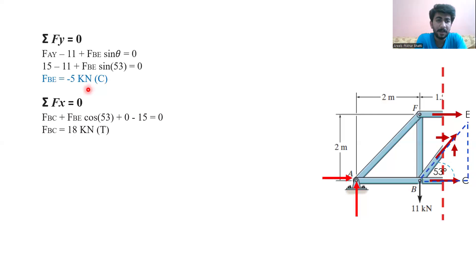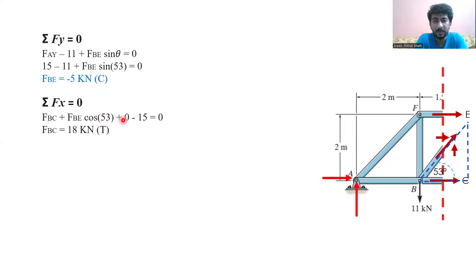Applying the sum of forces in X equal to zero, we get: F_BC plus F_BE times cosine theta plus zero equals zero. Substituting the value of theta as 53 degrees and F_BE as minus 5 kN, and solving this, we get the force in member BC equal to 18 kilonewtons. This member is in compression.